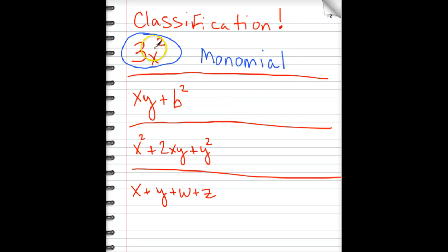You'll notice that there's no addition or subtraction in here. In contrast to the next guy, this is a monomial plus another monomial. When you have this situation, this is called a binomial. The prefix bi, of course, indicating two. It's basically two monomials.